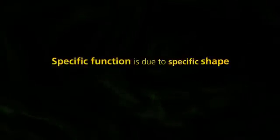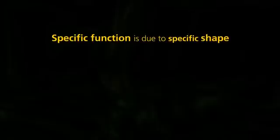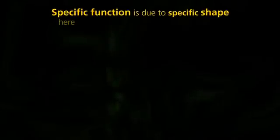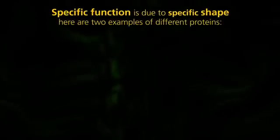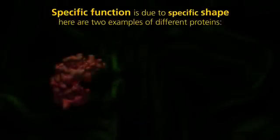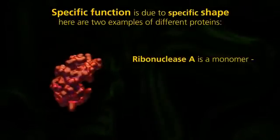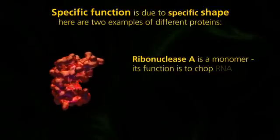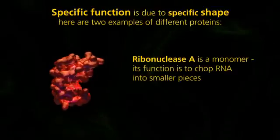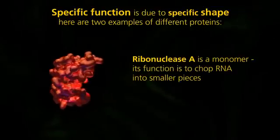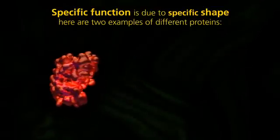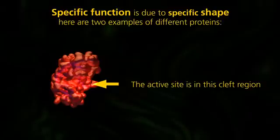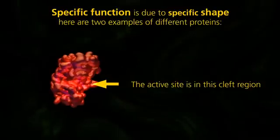Specific function is due to specific shape. Here are two examples. Ribonuclease A is a monomer. Its function is to chop RNA into smaller pieces. The active site is in this cleft region.